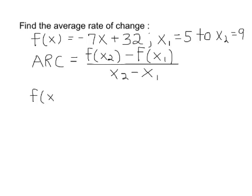f of x sub 2, for this problem, our x sub 2 value is 9, and that means to replace every occurrence of x in the problem, which in this problem there's only one occurrence of x, with the value inside the parentheses. So that would give us -7 times 9 plus 32.